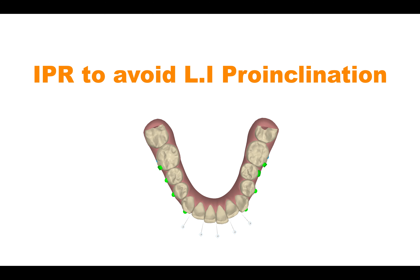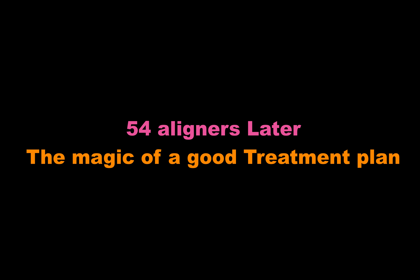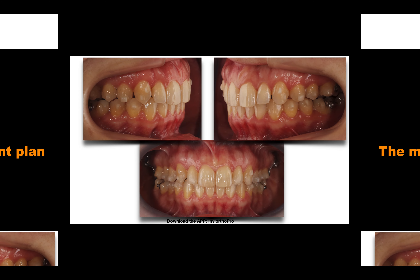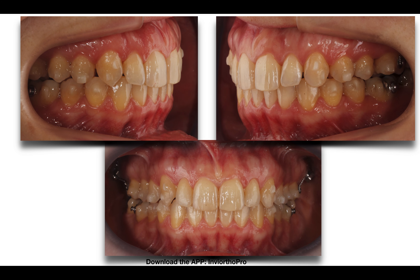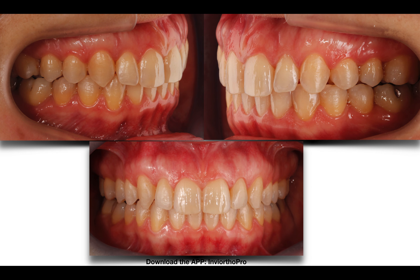I did the IPR from mesial of 3 in order to avoid prognation of the incisors. At the end, it was 54 aligners, and you can see here, before removing the attachments, Class 1 on both sides. I corrected the deep bite and achieved a beautiful finishing of the case, the final shape of the arches. When I removed the attachments, perfect occlusion, Class 1 on both sides.